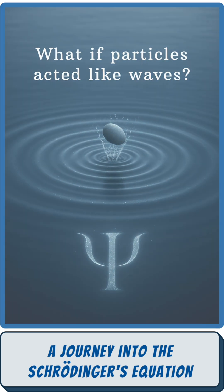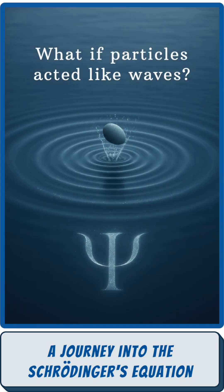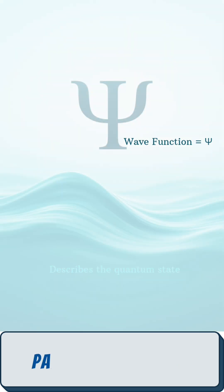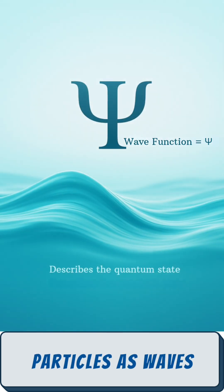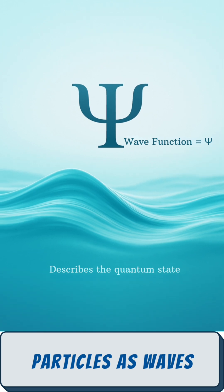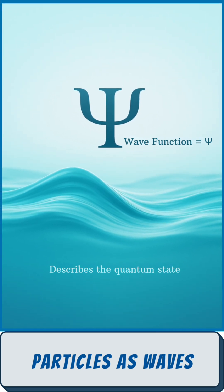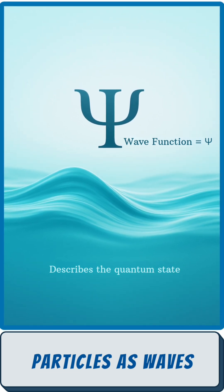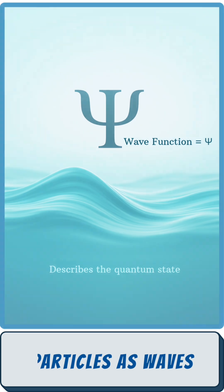Welcome to the fascinating world of the Schrödinger equation. In quantum mechanics, particles like electrons are not tiny balls — they act like waves. Something called a wave function describes these waves, often written as the Greek letter psi. It tells us everything we can know about the particle state.